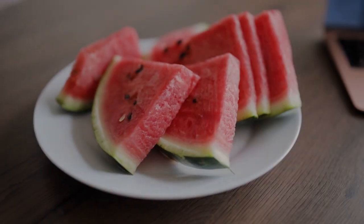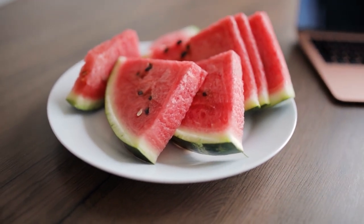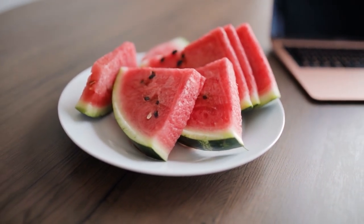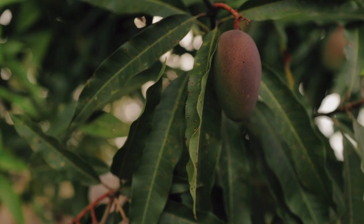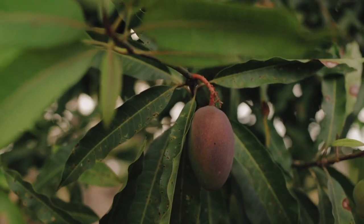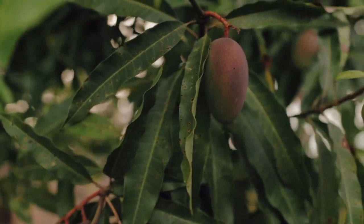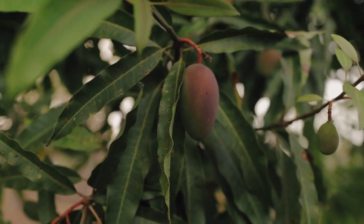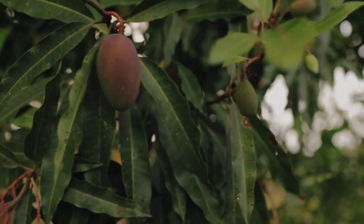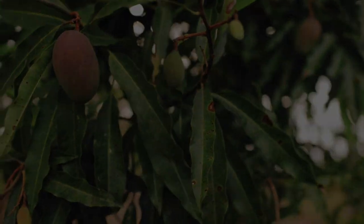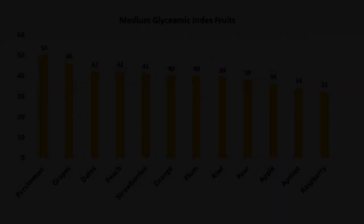Sugar patients should avoid watermelon. Fruits with GI below 65, like mango, papaya, and banana, can be taken by diabetic patients but not on a daily basis. Now we will move towards category 2 — medium GI.